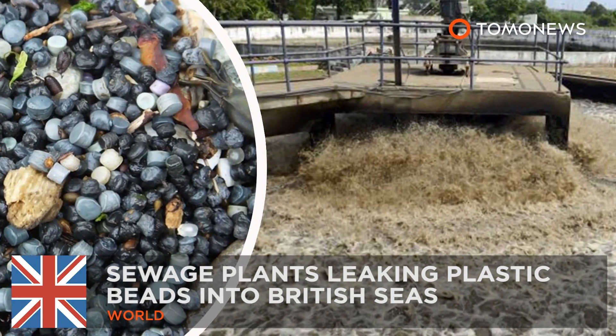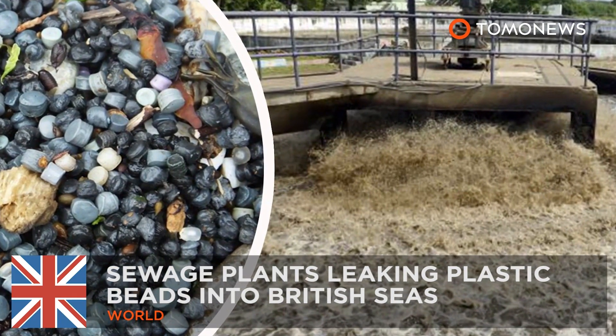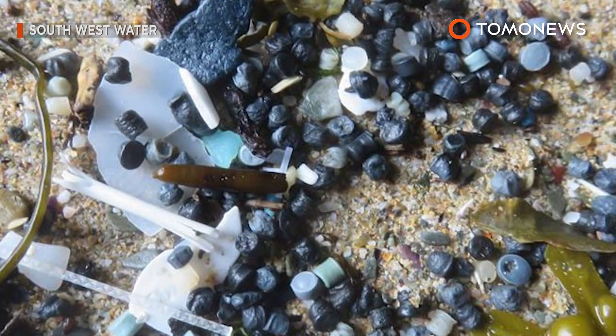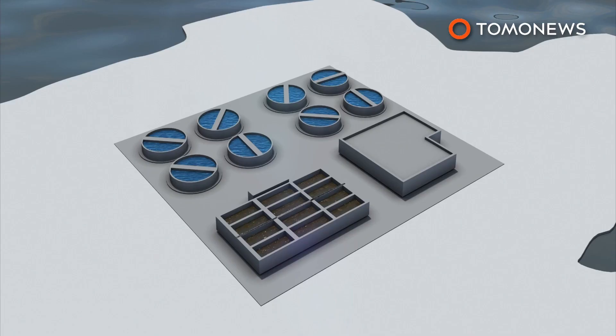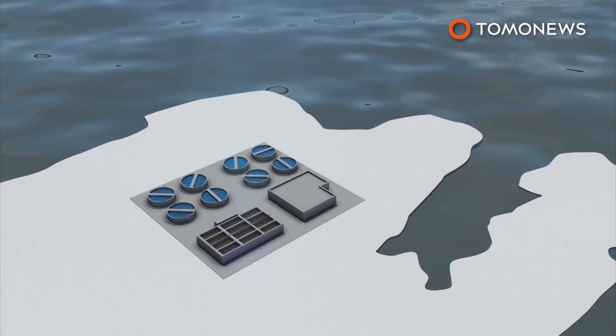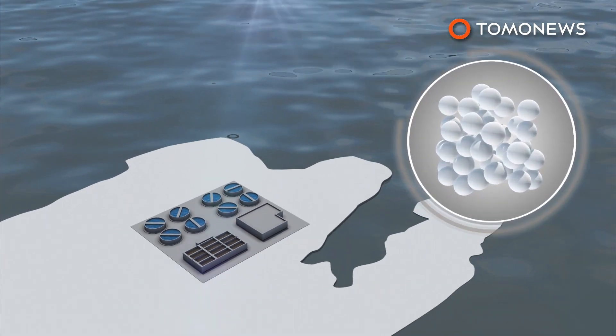Sewage plants leaking plastic beads into British seas. Here's some good news for a change. Looks like we've discovered a new source of ocean plastic pollution. According to a new report, sewage plants could be leaking millions of tiny plastic beads used for wastewater treatment into British seas.